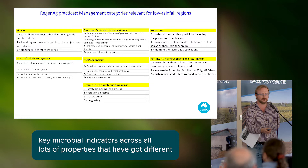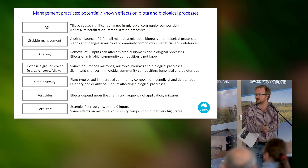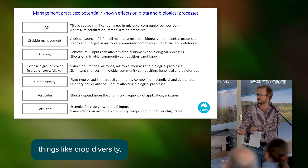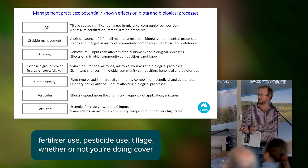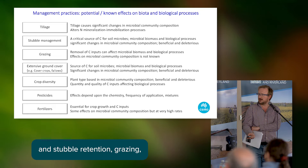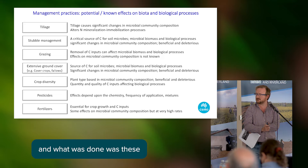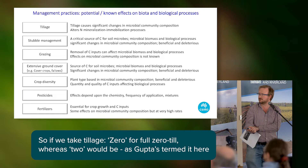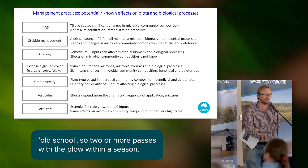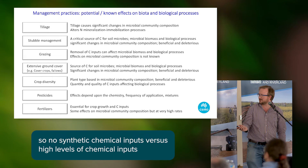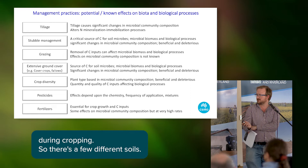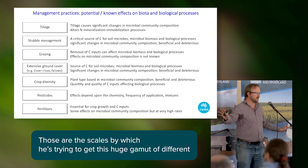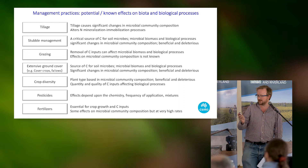There are many different practices that are regen-ish, for want of a better term. The purpose of this project is to sample key microbial indicators across many properties with different characteristics of regenerative agricultural practice. These include crop diversity, fertilizer use, pesticide use, tillage, cover crops, ground cover during the dry season, stubble retention, and grazing. Scores are given for each on a scale - for example, tillage: zero for full no-till versus two for old school two or more passes with a plow per season. Fertilizers: no synthetic chemical inputs versus high levels of chemical inputs during cropping.